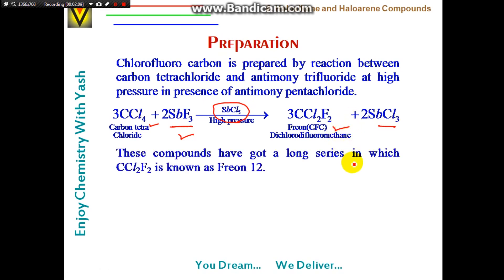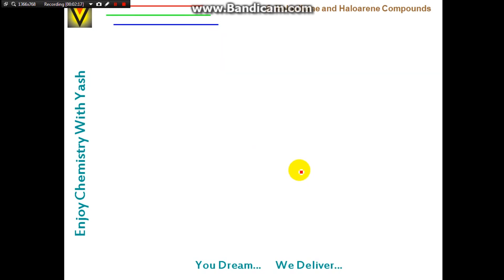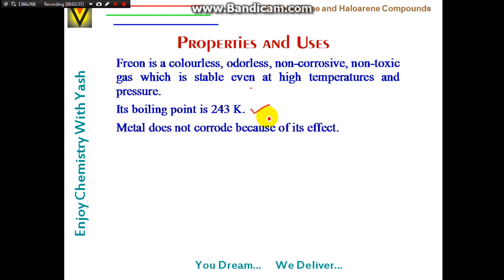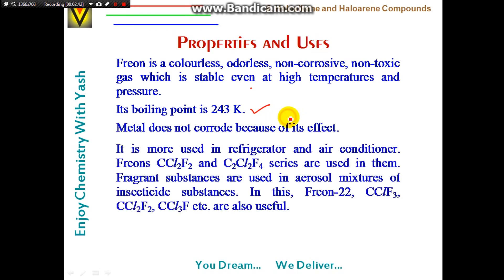Freon-12 (CCl₂F₂) is the major compound in the Freon series. Freon is a colorless, odorless, non-corrosive, non-toxic gas, stable even at high temperature and pressure, with a very low boiling point of 243 K — hence gaseous at room temperature. Metals do not corrode due to it, making it widely used in refrigerators and air conditioners. Freon series including CCl₂F₂, CCl₂F₄, Freon-22 (CClF₃) are also used in aerosol sprays.